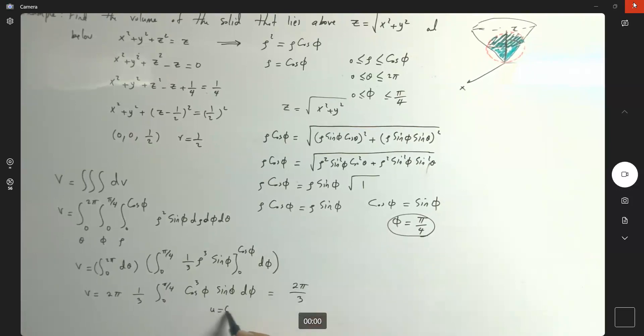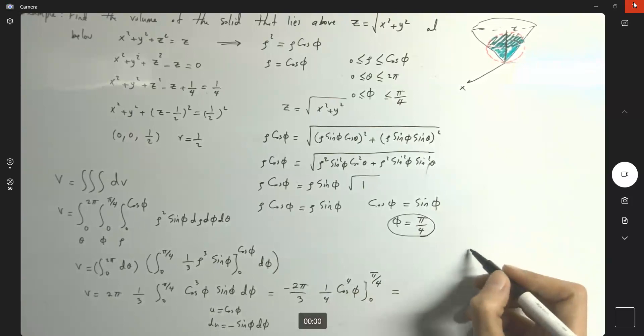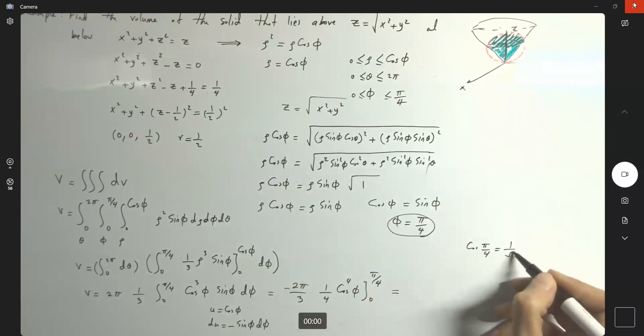And here I'm going to use u substitution. So u is cosine phi, and du becomes negative sine phi d phi. So I put a negative sign in front of it and I get one fourth u to the fourth, cosine to the fourth of phi, zero to pi over 4. So if I do the computation here, remember that cosine of pi over 4 equals one over square root of 2. So if I raise it to the fourth power, I get one fourth. So if you do the simplification, it equals pi over 8.